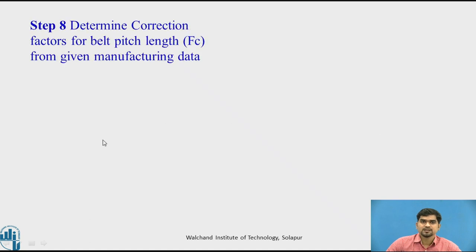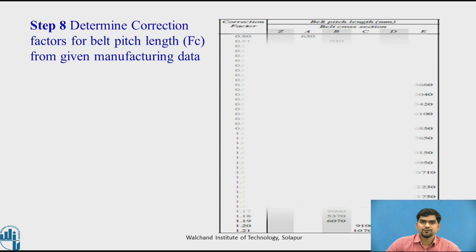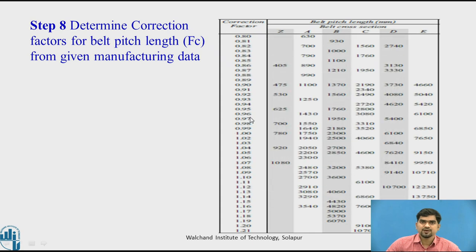Step 8: Determine the correction factor for the belt pitch length, Fc, from the manufacturing data. For example, if the belt pitch length is 2500, we select Fc equal to 1.